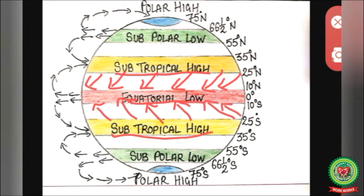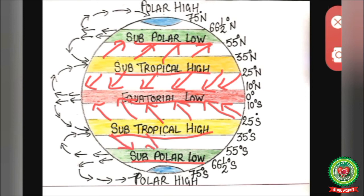The second wind is the westerlies. We have subpolar low pressure belt in the north and south. The winds blow from the subtropical high pressure belt to the subpolar low pressure belt. They are deflected towards their right side in the north and towards their left side in the south due to rotation of the earth, so they blow from west to east and are called westerlies. They are also called anti-trade winds because they blow in the opposite direction to the trade winds.